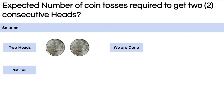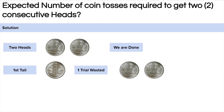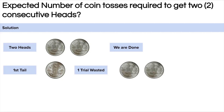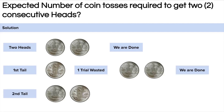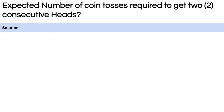Now let's see what happens if we get a tail on the first trial. Here we have wasted one trial and we are back to where we started — we still need two consecutive heads. The third case is when the tail comes at the second trial. In this case we have wasted two trials and are at the same place where we started, still wanting two consecutive heads.